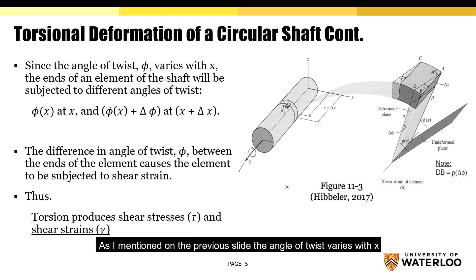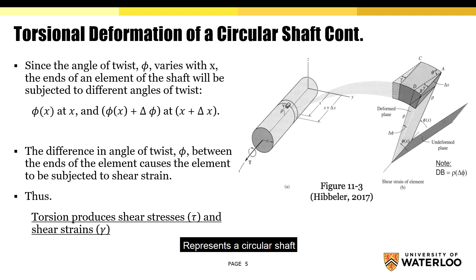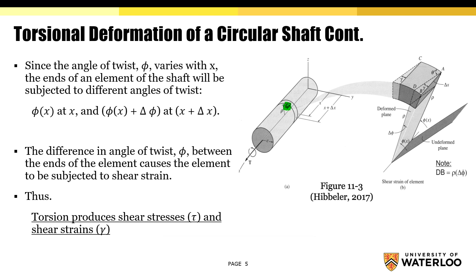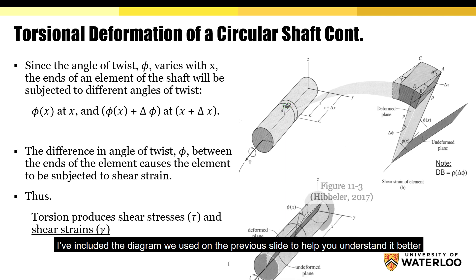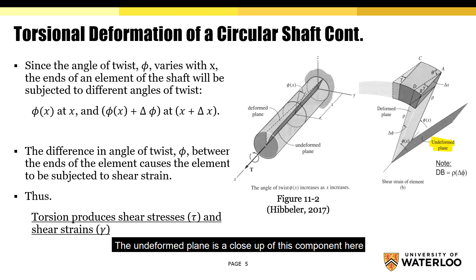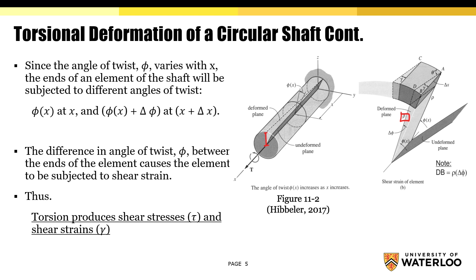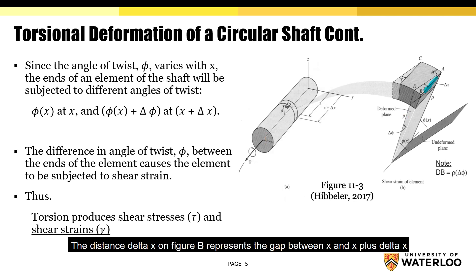The angle of twist varies with x. Now let's consider the figure on the right. Figure A represents a circular shaft, while figure B represents a close-up of a specific element located between the distance x and x plus delta x. The undeformed plane is a close-up of one component, while the deformed plane is a close-up of another. The vertical distance rho represents the distance from the axis to the surface of the shaft, and the distance delta x on figure B represents the gap between x and x plus delta x.